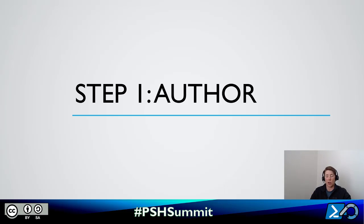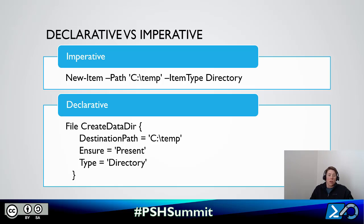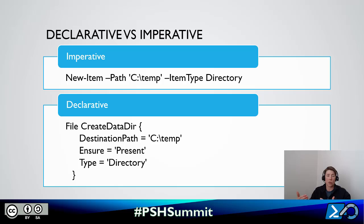Step one: authoring. How do we write our first DSC configuration? Usually when we write PowerShell, most of our scripts are going to be imperative — we describe the exact steps we want to run to complete our tasks. The top half of this slide shows I'm using New-Item to create a directory at C:\temp. That's perfect — it's going to create the directory at that location, just one line of code.